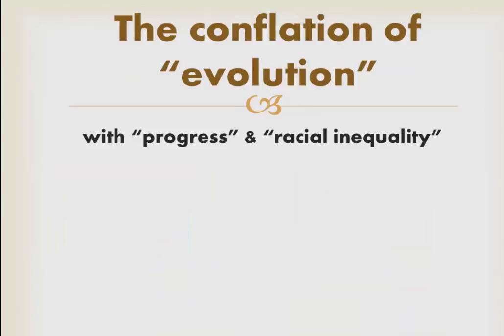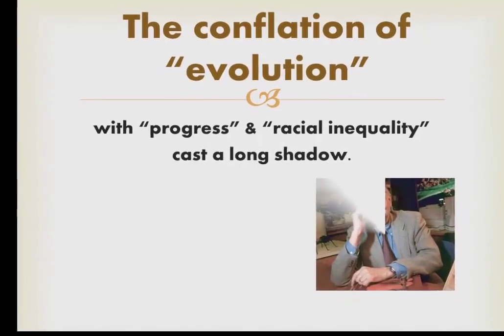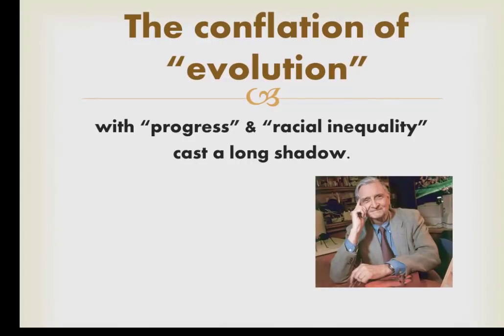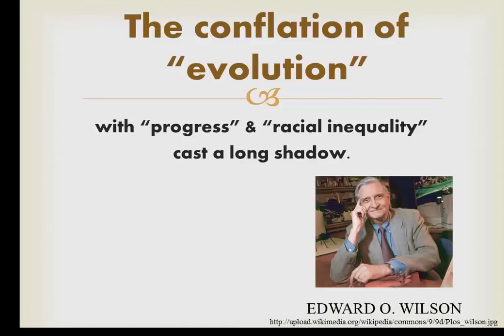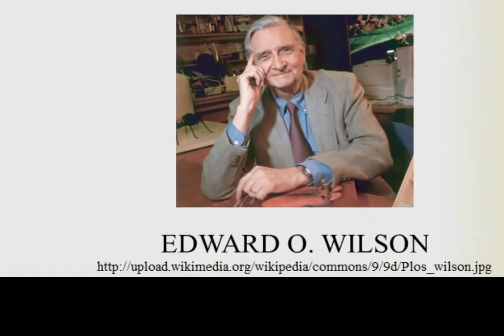This conflation of evolution and biology with progress and racial inequality cast a very long shadow over the 20th century. When scientists in the 1960s and 70s started trying to apply evolutionary biology to humans again, they were almost immediately denounced as racist. An example is Edward O. Wilson, who had water poured on his head at one meeting with a sign placed over him saying 'Wilson, you're all wet.' There was tremendous controversy associated with the return of evolutionary biology in the 1960s and 70s because it was interpreted as an effort to revive 19th century racism and civilizational perspectives.